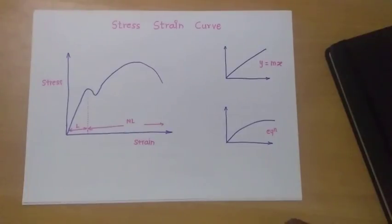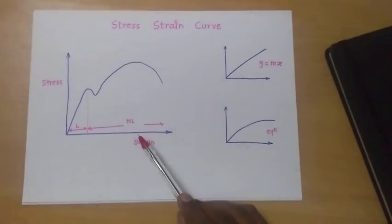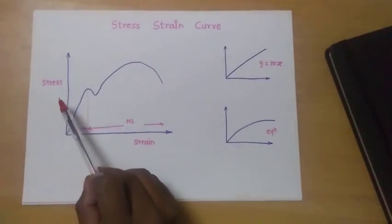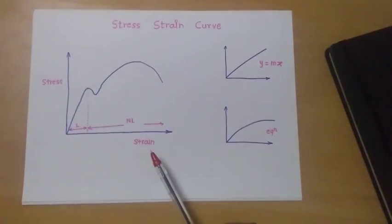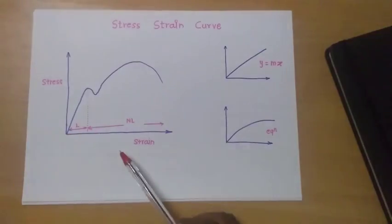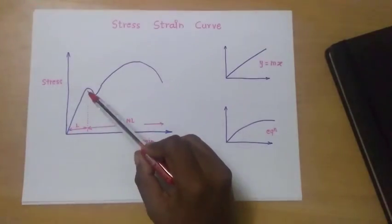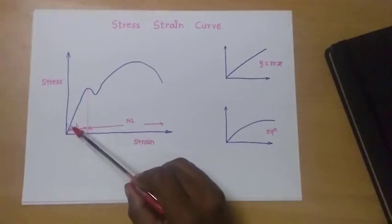First of all, let's understand what is meant by the stress-strain curve. For steel, we have drawn this curve here — on the y-axis there is stress and on the x-axis there is strain. Initially, stress increases and strain also increases linearly up to the yield point.